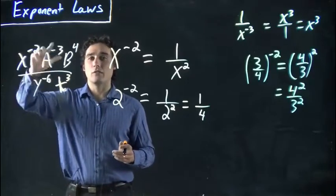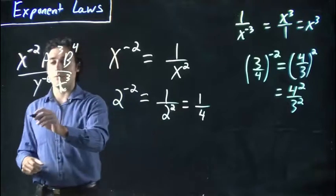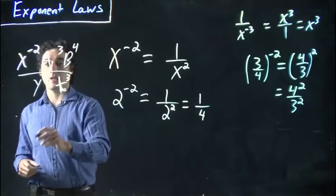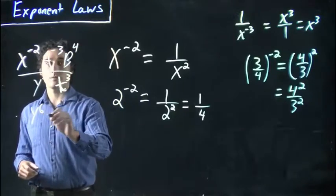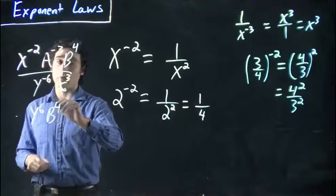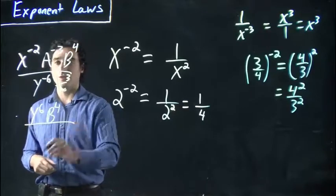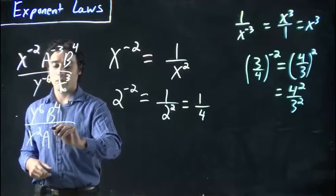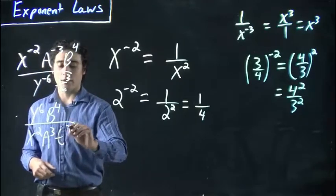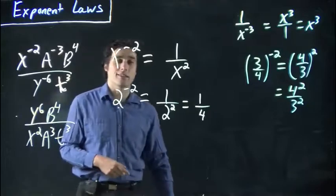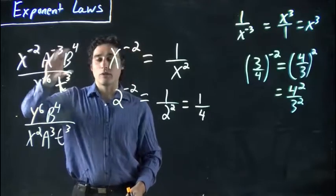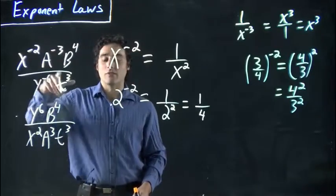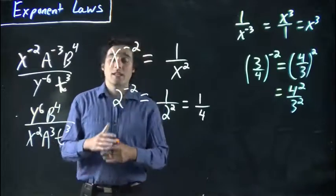But the negatives get flipped. So this would be the same as saying y to the 6, b to the 4—again, remember b was already positive so we leave it alone—x squared, a to the 3, and t to the 3. We flip the things that need to be flipped. Negatives get flipped, the exponents become positive, that's it.